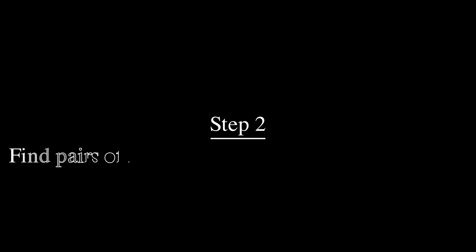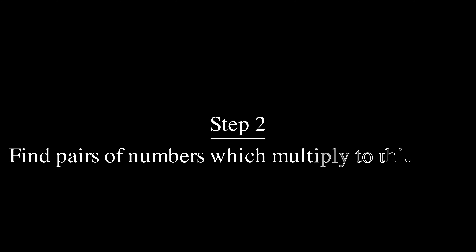Step two is to try to find all of the pairs which multiply to this number. Now it turns out you don't really need to find all of them, but go ahead and write down as many numbers as you can that multiply to the magenta value for now. Pause the video and resume when you're ready to continue.